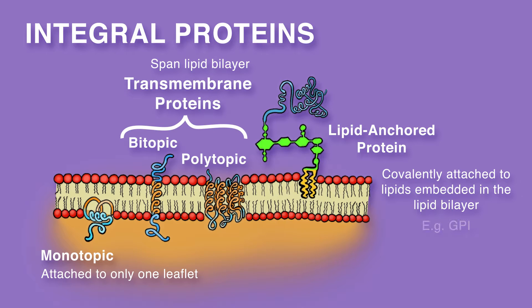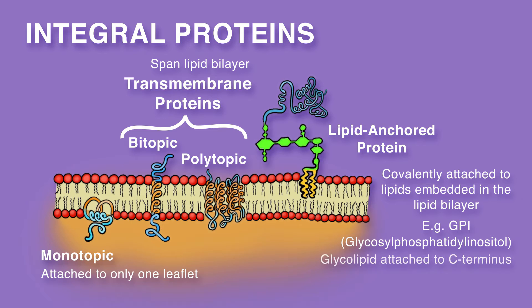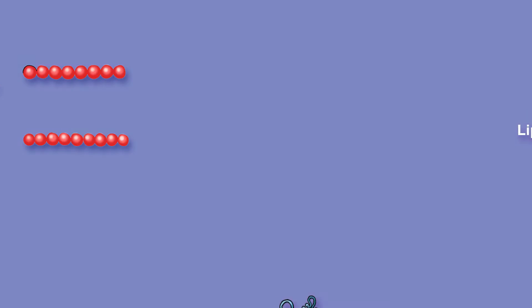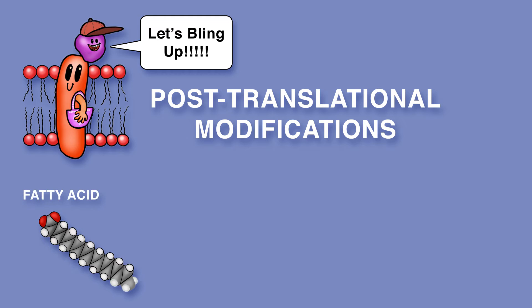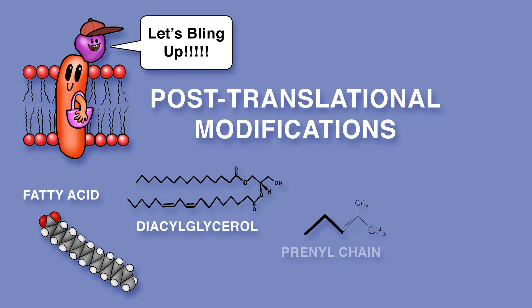Lipid-anchored proteins are covalently attached to lipids embedded in the lipid bilayer. For example, GPI, or glycosyl phosphatidyl inositol, is a glycolipid that gets attached to a protein C terminus during post-translational modification. It acts as an anchor for proteins to the outer leaflet of the plasma membrane. Both integral and peripheral proteins can be post-translationally modified, with addition of fatty acids, diacylglycerol, prenyl chains, or GPI.